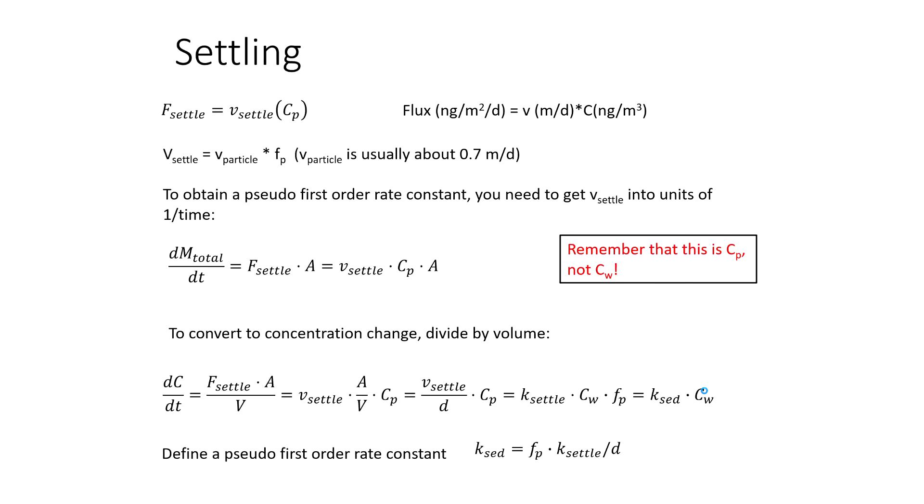So now we can use this math. We're going to define a flux of settling of particles. And a flux has units of nanograms per square meter per day or mass per unit of area per time. And you can get that by multiplying a velocity in something like meters per day by a concentration, which has units of something like nanograms per cubic meter. So when you multiply this out, one of these cancels with that, and you get nanograms per square meter per day.